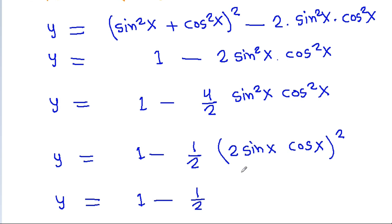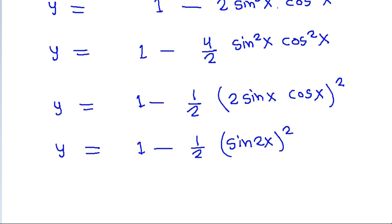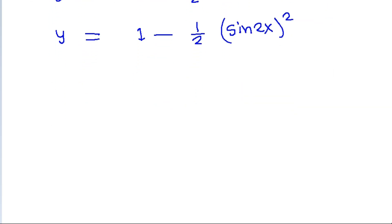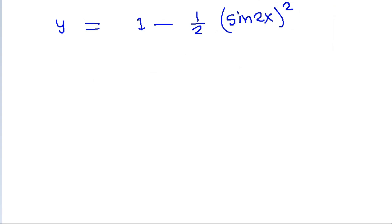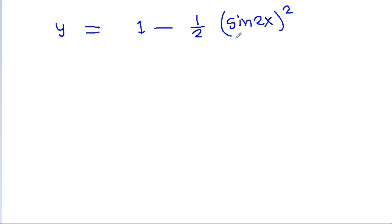We get y = 1 - (1/2)·(2sinx·cosx)². Since 2sinx·cosx = sin2x, this simplifies to y = 1 - (1/2)·sin²(2x).